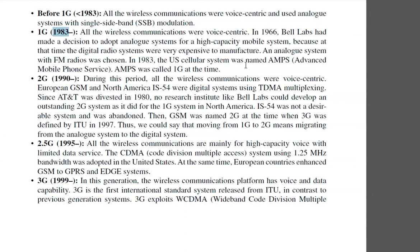After 1983, the US cellular system was named AMPS — Advanced Mobile Phone Service. AMPS was called first generation, or 1G, at the time.